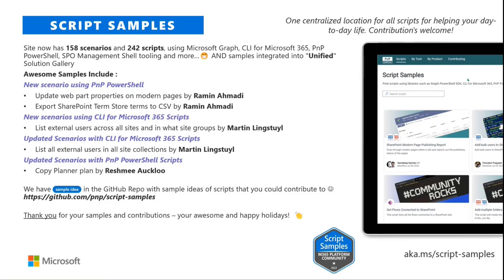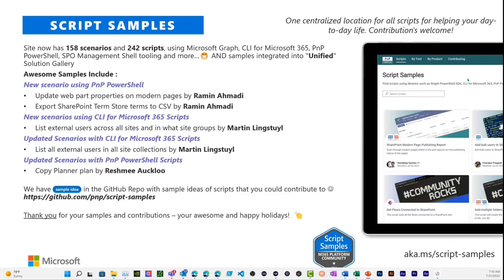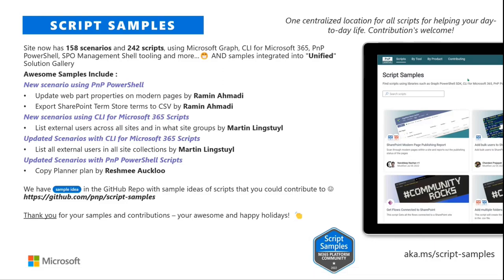Next up is Script Samples — one of the newer and most popular repositories. We have 158 scenarios and 242 scripts using Graph CLI for M365, PowerShell, SPO Management Shell, and more. This is a fantastic wide spectrum of opportunity to consume information and data that helps you in your day-to-day work, and there are many ways to contribute. There's also a dedicated badge for that. See more at aka.ms/script-samples.